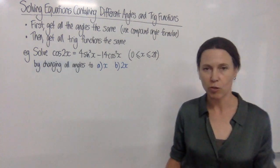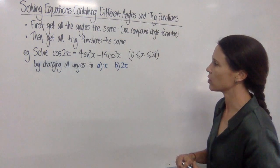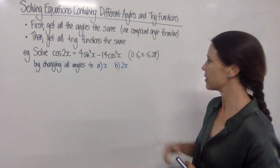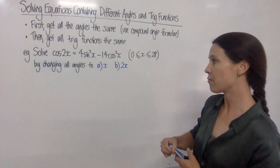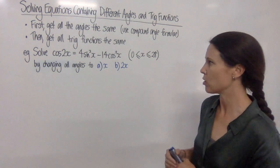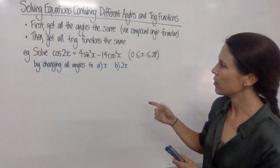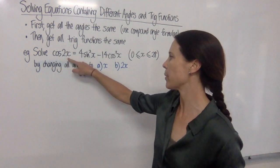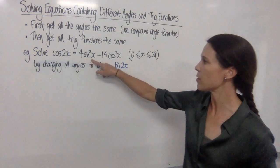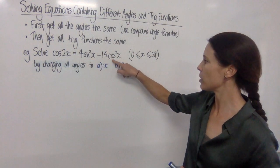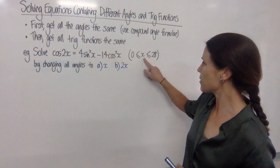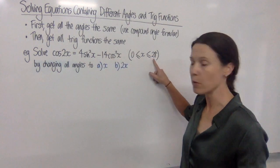There'll be many ways that you can do the same thing. This first question gives us two different ways that we can do this question. And in fact, I'm going to do the first way two different ways again. So here we need to solve cos of 2x equals 4 sin squared x minus 14 cos squared x, and x must be between 0 and 2 pi. So we're working in radians.